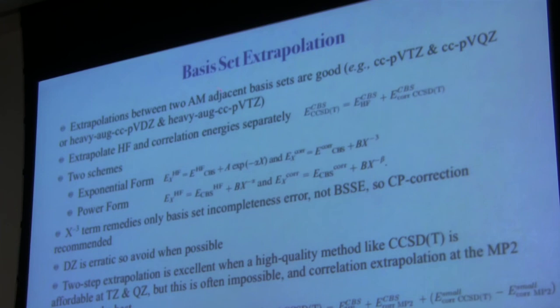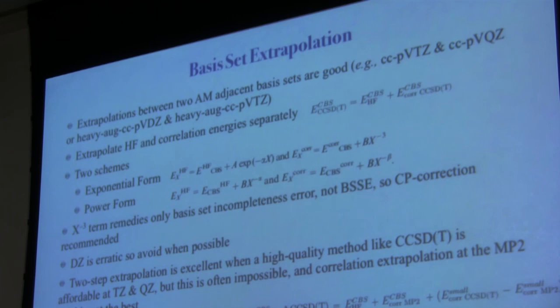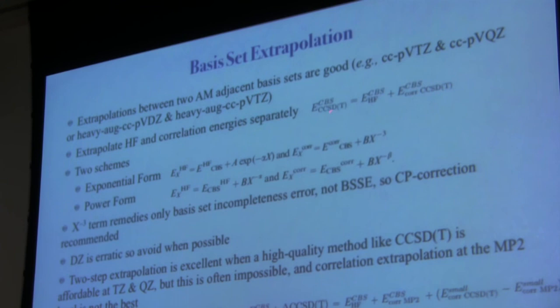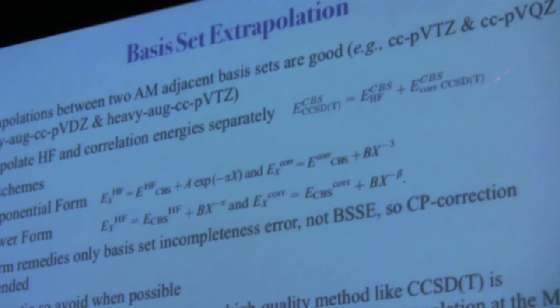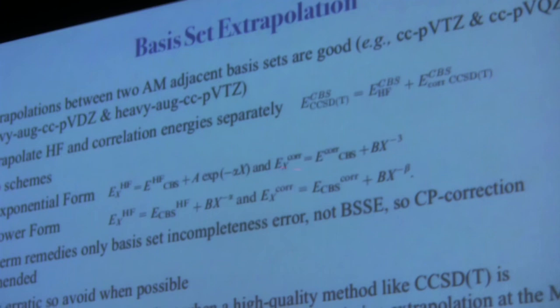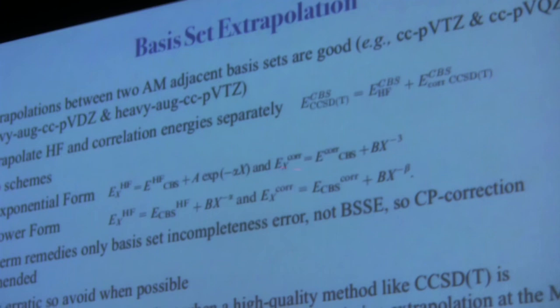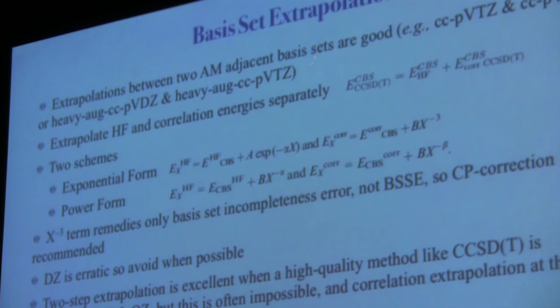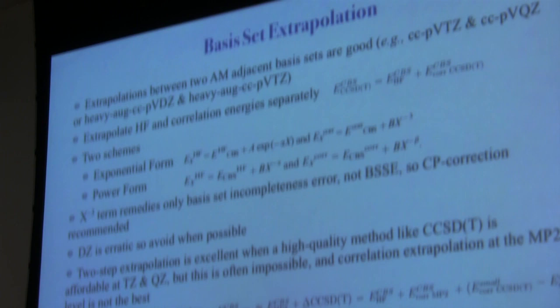You choose two adjacent basis sets like cc-pVTZ and cc-pVQZ and extrapolate the Hartree-Fock and correlation energies separately. Your CBS estimate of CCSD(T) is two terms: Hartree-Fock CBS plus correlation CBS. There are a number of different extrapolation schemes; we often use this exponential form. If at all possible, avoid double-zeta when choosing these two adjacent basis sets, because that can be rather erratic.